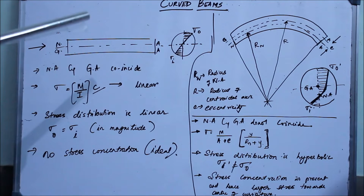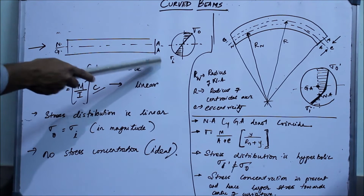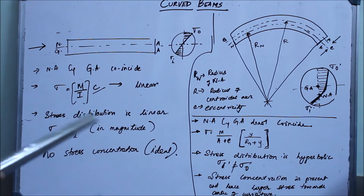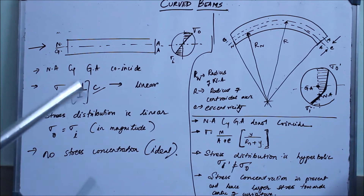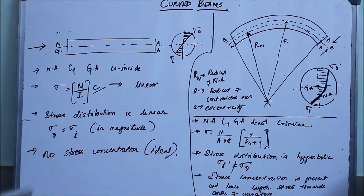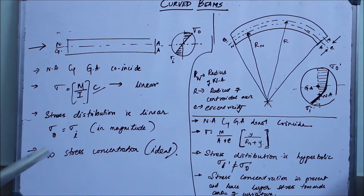We have studied this in mechanics of materials. Because the stress distribution is linear, the stress induced in the innermost fiber is equal in magnitude to the stress induced in the outermost fiber — opposite in sense but equal in magnitude. Since the beam is straight, and assuming ideal conditions with no cracks or surface irregularities, no stress concentration factors are present. There are no stress raisers in straight beams.